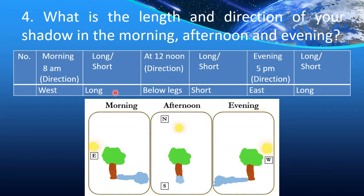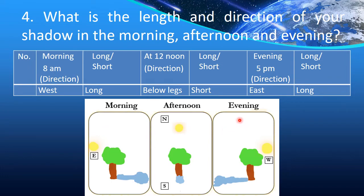In the morning at 8 AM, the sun is in the east, so the shadow will be in the west — direction: west, length: long. At 12 noon, the shadow will be directly below your legs, and the length will be short, as the sun is overhead. In the evening at 5 PM, the sun is in the west, so the shadow will be in the east, and the length of the shadow will be long. You just have to write this in the table.